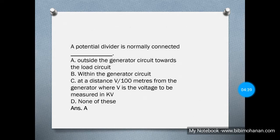A potential divider is normally connected — where is it connected? The options include outside the generator circuit towards the load circuit, within the generator circuit, at a distance V/100 meters from the generator, or none of these. Option A is correct: outside the generator circuit towards the load circuit.